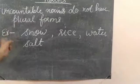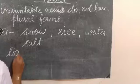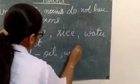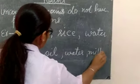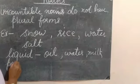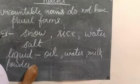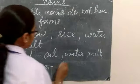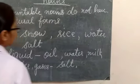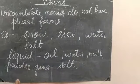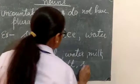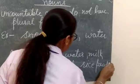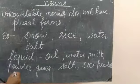Uncountable nouns can be in the form of liquid — like oil, water, milk, etc. They can be in the form of powder — like salt, which is also a powder, and rice powder. They can also be in the form of gases. We cannot count these, so these are uncountable nouns.